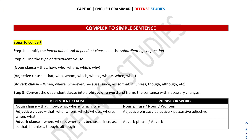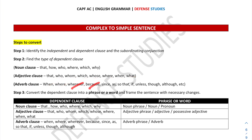The second step is to find the type of dependent clause — is it a noun clause, an adjective clause, or an adverb clause? A noun clause typically starts with conjunctions like 'that', 'how', 'who', 'where', 'which', or 'why'. An adjective clause uses 'who', 'whom', 'which', 'whose', 'where', or 'when'. An adverb clause uses 'when', 'where', 'wherever', 'because', 'since', 'as', 'so that', 'if', 'unless', 'though', 'although', etc.